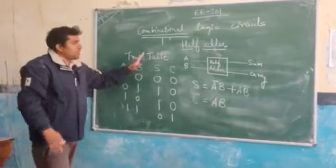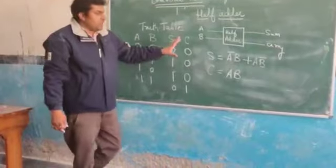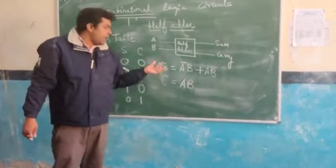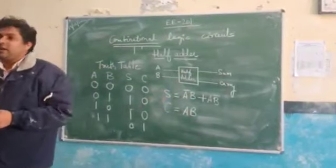So our first work is identifying inputs and outputs. Then the truth table. Then the expression. Now we will implement the half-adder circuit.